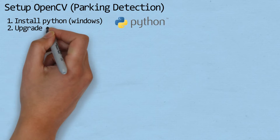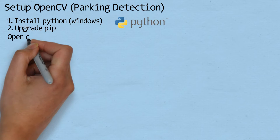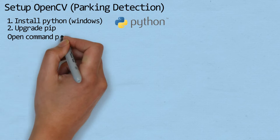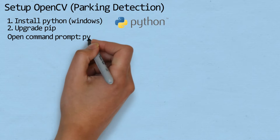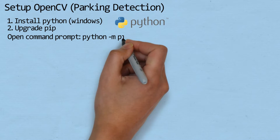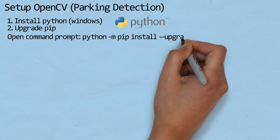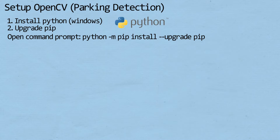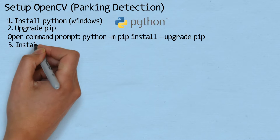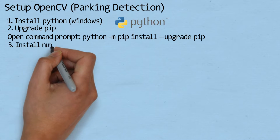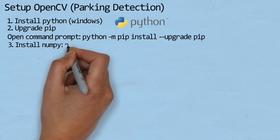After Python installation, upgrade pip. Open command prompt, run as administrator, then run the following command. Still on command prompt, install numpy.